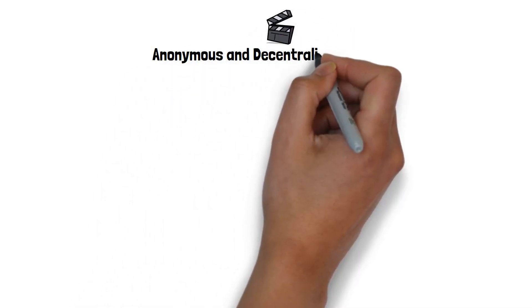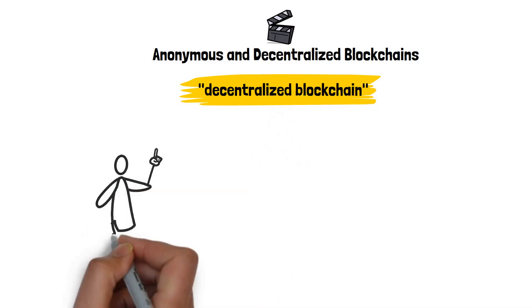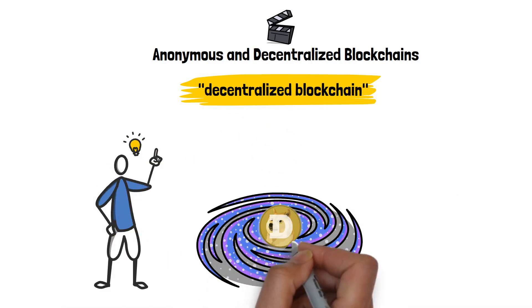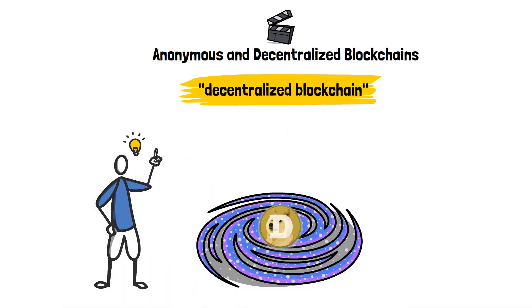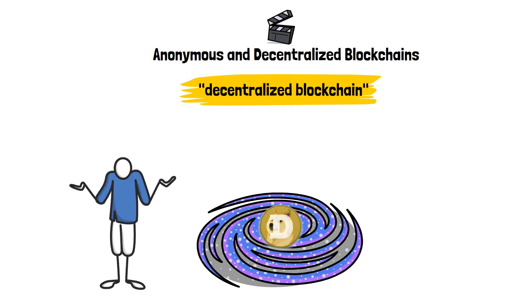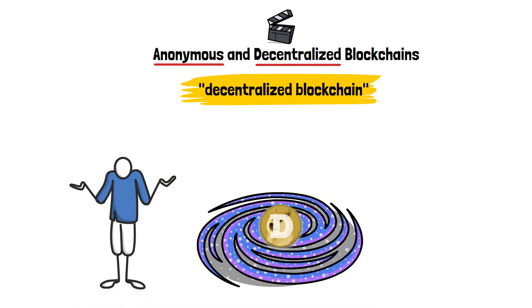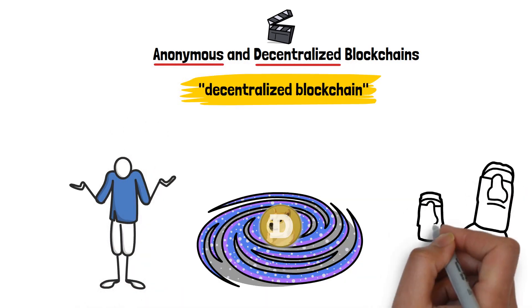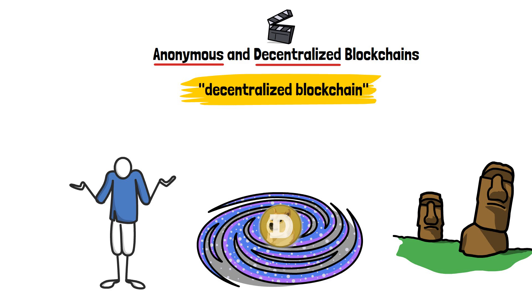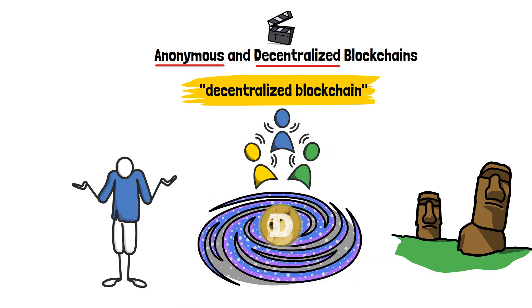Hey, in this video I'm going to tell you about anonymous and decentralized blockchains. The term decentralized blockchain is definitely something you've encountered if you've spent even a day in the crypto space. We often get so numb to terms such as these that we don't even really give them much thought. However, did you know that decentralization and anonymity are among the fundamental cornerstones of the crypto industry as a whole? These two concepts are also very controversial, especially when it comes to crypto regulations.